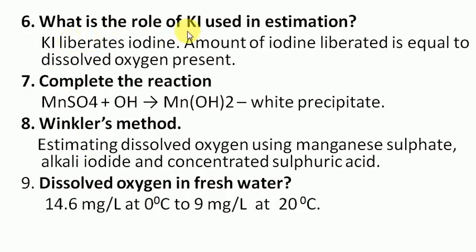Question 6: What is the role of KI (potassium iodide) in the estimation of dissolved oxygen? Potassium iodide liberates iodine. The amount of iodine liberated is equal to the dissolved oxygen present. Any oxygen present is equivalent to the iodine gas liberated, and this iodine is then titrated with sodium thiosulfate.